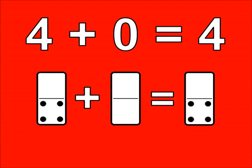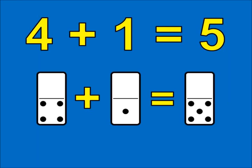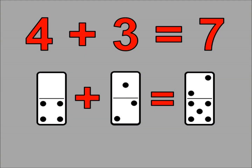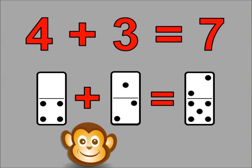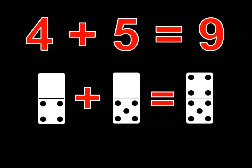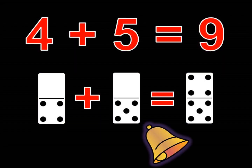4 plus 0 is 4. 4 plus 1 is 5. 4 plus 2 is 6. 4 plus 3 is 7. 4 plus 4 is 8. 4 plus 5 is 9.